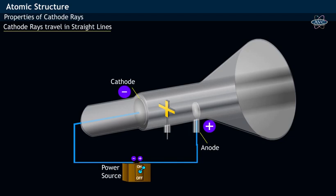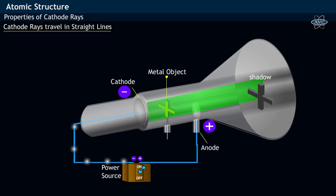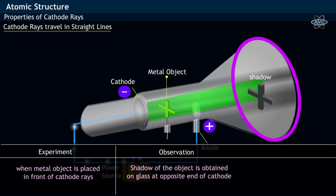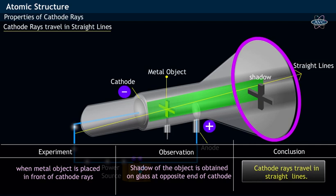In the cathode ray discharge tube, when a metal object, shown as a cross, is placed along the path of cathode rays, it was observed that the shadow of the metal object is obtained on the glass wall opposite to that of the cathode. From this observation, one may conclude that cathode rays travel in straight lines.